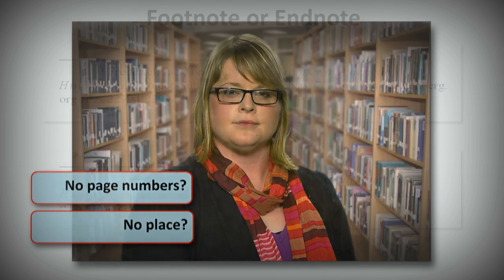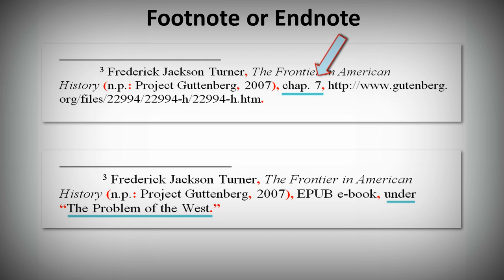What do you do if the ebook doesn't have page numbers, or if there isn't a place of publication? If you don't have page numbers, include the chapter number or the section heading it's under. Just like with page numbers, if you are using a URL, this information goes before the URL. If you downloaded the ebook, this information goes after the format.